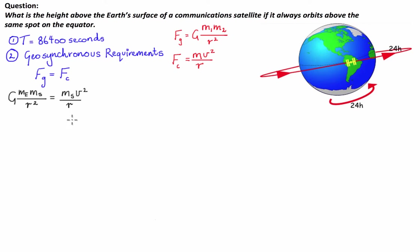If we divide both sides by the mass of the satellite, the satellite masses cancel out on either side. Also, if we multiply the radius from the right-hand side over to the left, we cancel out one of the radius squared terms in the denominator on the left. So let's rewrite the equation with the remaining variables.